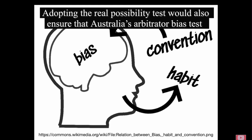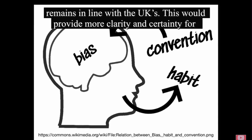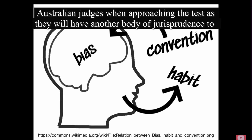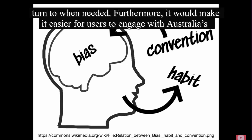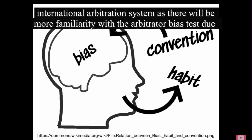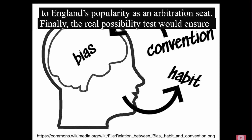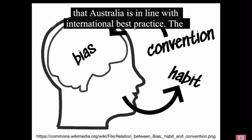The real possibility test maintains a higher level of protection to international arbitration than the reasonable apprehension test, whilst also ensuring that public confidence is maintained, which the real danger test fails to do. Codifying the real possibility test ensures consistent jurisprudence. A common and prevailing sentiment is that the tests do not produce any meaningful differences. Whilst this may be so in most cases, in several jurisdictions the difference in the formulation of the tests means that there remains a potential for inconsistent outcomes. Although there have been no cases identified by the author where the diverging tests have in fact led to conflicting outcomes, this potential was identified by Lord Wolfe in Gough — his Lordship noted that had the real danger test been applied in Sussex Justices, a different decision would have been reached.